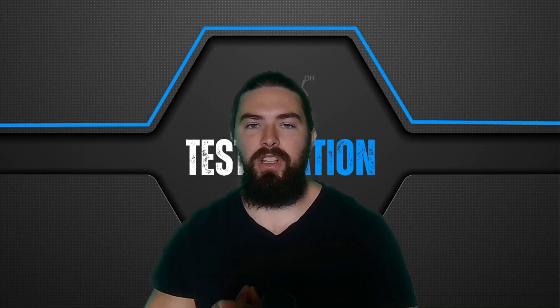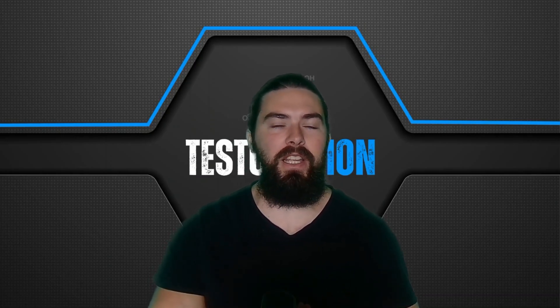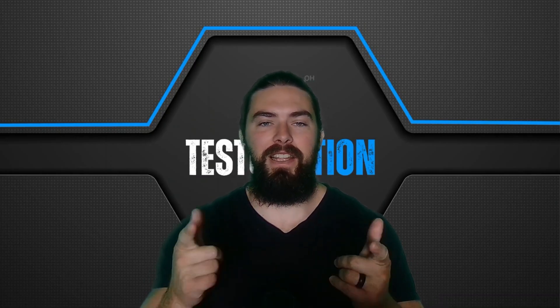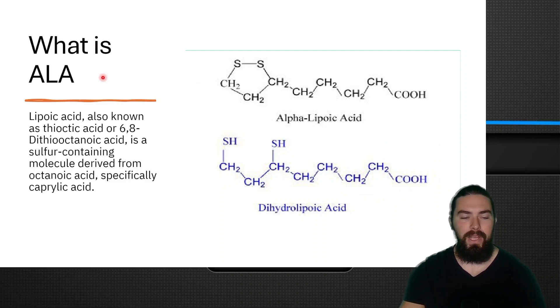What is up my fellow endronauts, let's talk about alpha lipoic acid on testosterone, different forms, how effective, fertility, all of that good stuff. Alpha lipoic acid is also known as thioctic acid or 6,8-dithio-octanoic acid. It is a sulfur-containing molecule derived from octanoic acid, specifically caprylic acid, which is a fatty acid. You can see these sulfur molecules—it's a sulfurous compound—and then it can be converted into dihydro-alpha lipoic acid and recycled back over and over in the body.